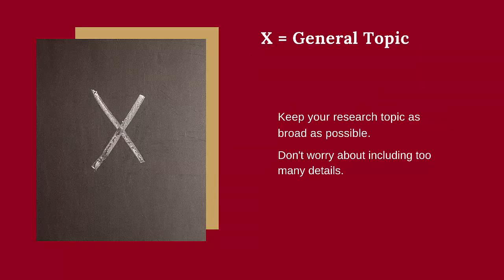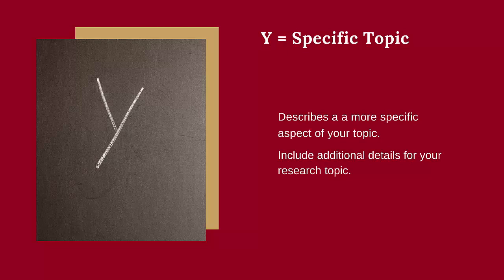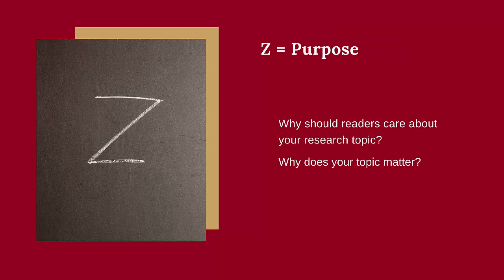The X refers to your basic topic. Keep your topic as simple as possible and don't worry if it's not very detailed. The Y should refer to your basic topic but also include a narrower, more specific element. This is where you will go from a broader to a more specific topic and where you would include additional details. The Z should answer the so what question — why should readers care about your topic and research assignment? Why does it matter?